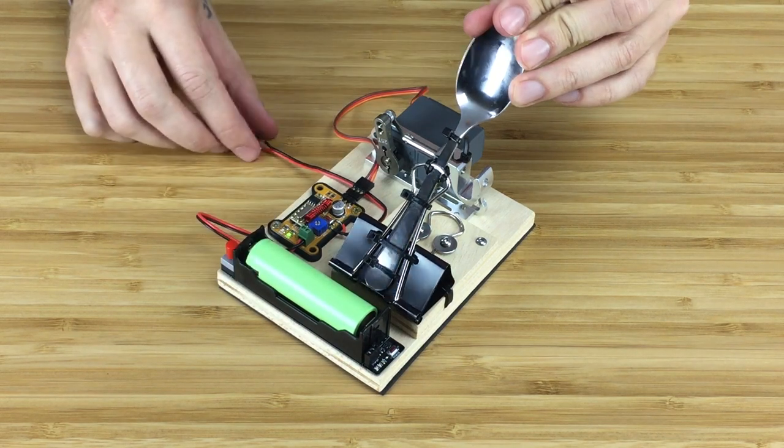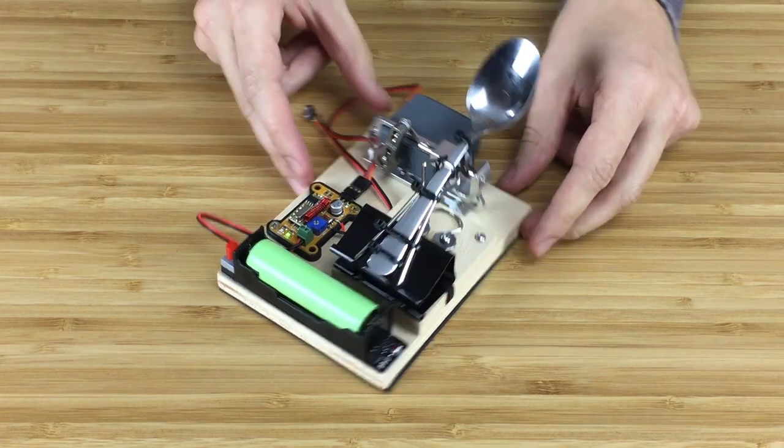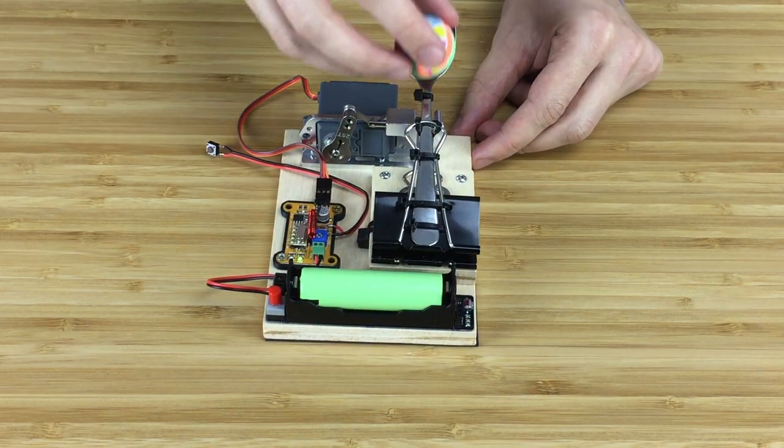You press the spoon, and then activate the servo so it catches the zip tie. Then load the projectile, and it's ready to use.